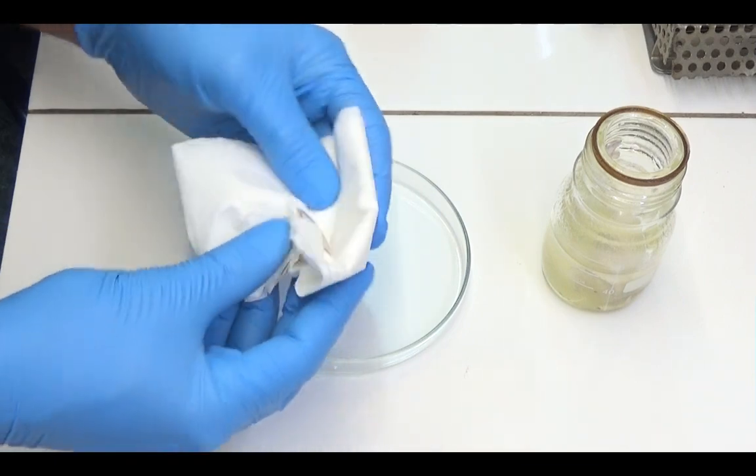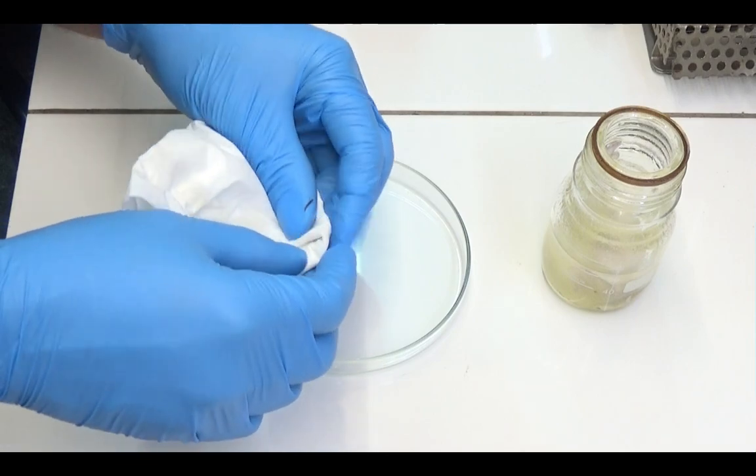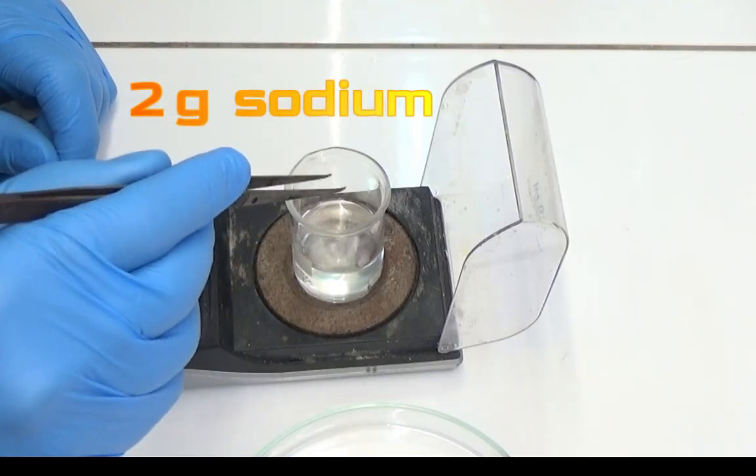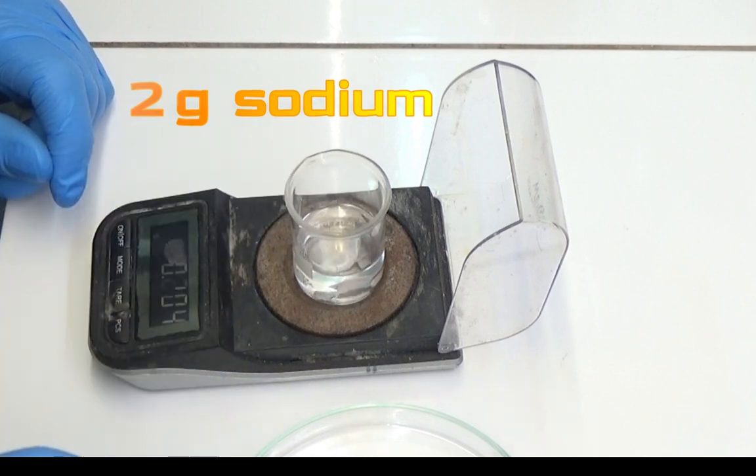Sodium is stored in liquid Vaseline, so to use it, we dry it well with blotting paper and cut it into small pieces. We weigh 2 grams in a beaker with hexane. The hexane cleans the remains of Vaseline and does not react with sodium.